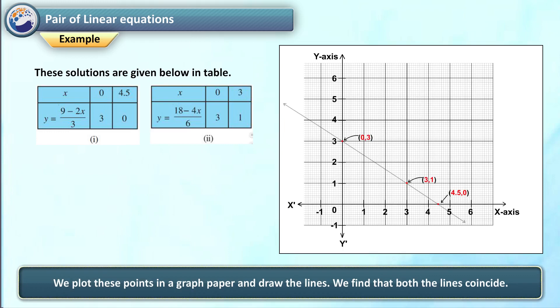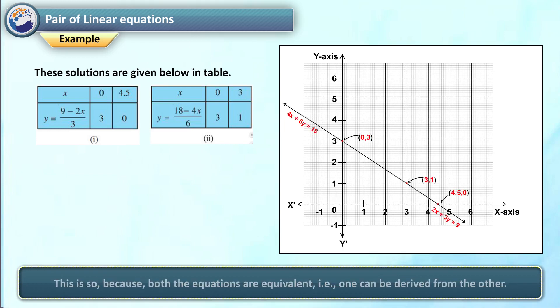We find that both the lines coincide. This is so because both the equations are equivalent — that is, one can be derived from the other.